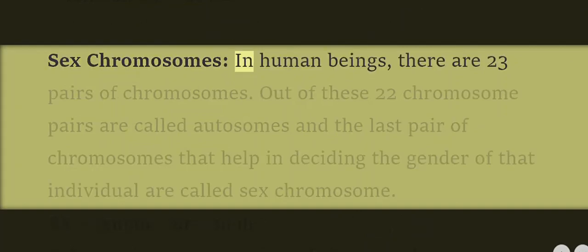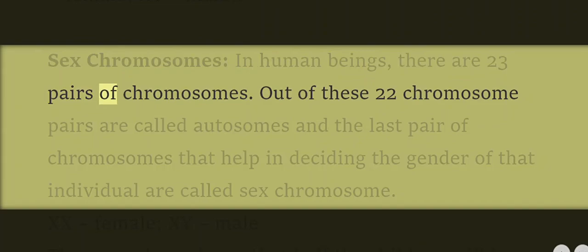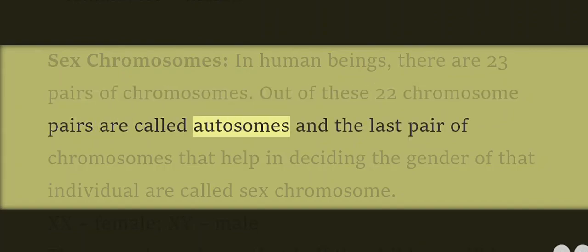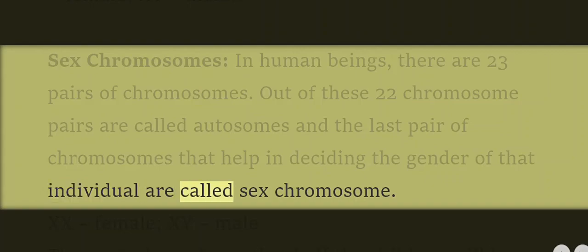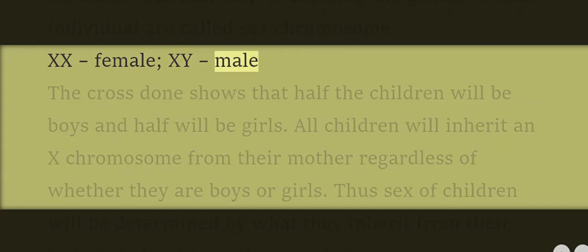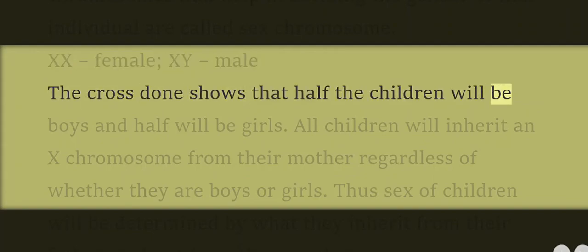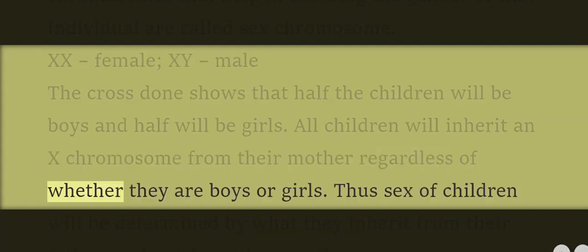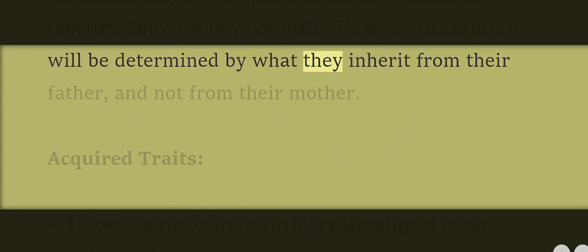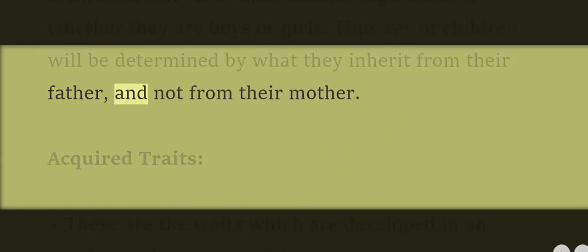Sex chromosomes in human beings: there are 23 pairs of chromosomes — 22 pairs are autosomes and the last pair are sex chromosomes that help decide gender. XX = female, XY = male. The cross shows that half the children will be boys and half will be girls. All children inherit an X chromosome from their mother regardless of whether they are boys or girls. Therefore, the sex of children is determined by what they inherit from their father, not from their mother.